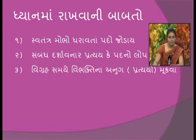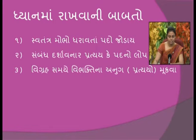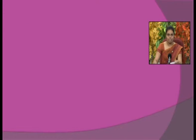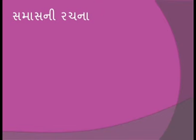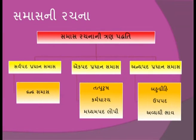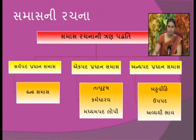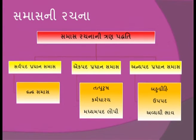વિગ્રહ સમયે વિભક્તિ કે અનુગ ના પ્રત્યયો મૂકવામાં આવે છે, એટલે કે સંબંધ સ્પષ્ટ કરીને સમાસનો પ્રકાર દર્શાવવામાં આવે છે. સમાસની રચનાના ત્રણ પ્રકારો છે: પ્રથમ છે સર્વપદ પ્રધાન સમાસ, બીજો છે એકપદ પ્રધાન સમાસ, અને ત્રીજો છે અન્યપદ પ્રધાન સમાસ.